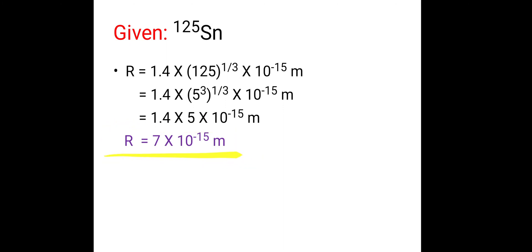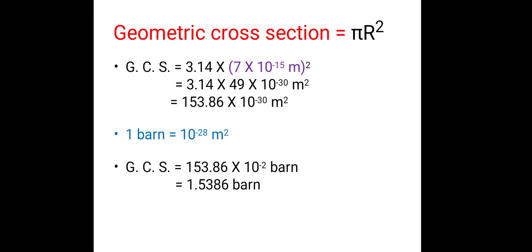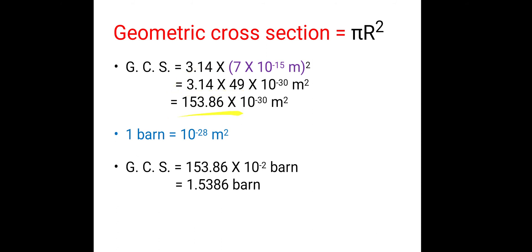Now we put that value of r into the formula. Geometric cross-section = π r² = 3.14 × (7 × 10⁻¹⁵)² meters. We compute: 3.14 × 49 × 10⁻³⁰ m². Multiplying 3.14 × 49 — which can be done with pen and paper without a calculator — gives 153.86 × 10⁻³⁰ m². This is the geometric cross-section in units of m².